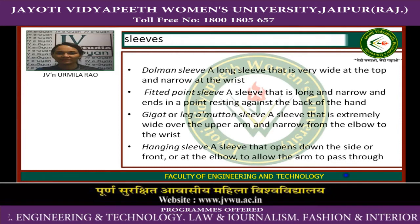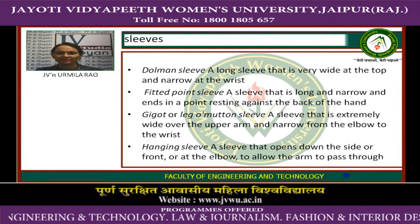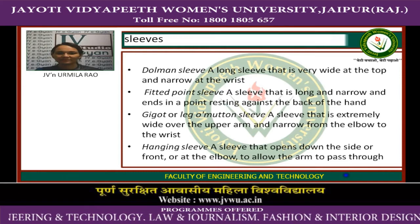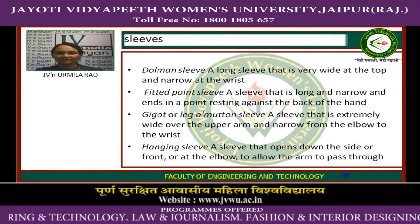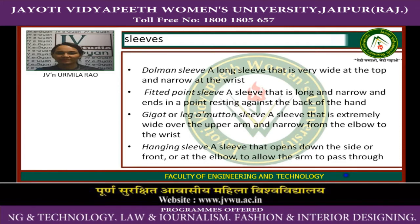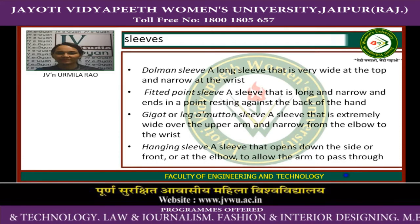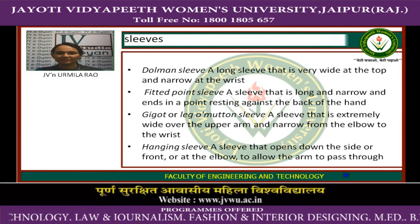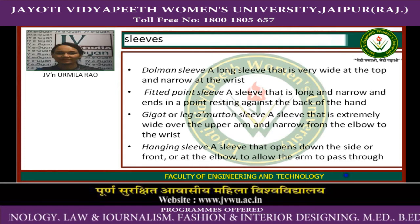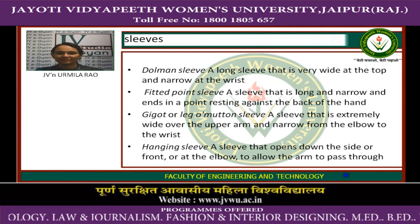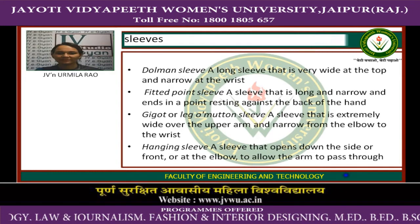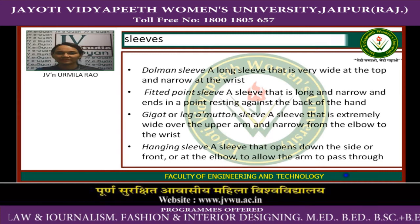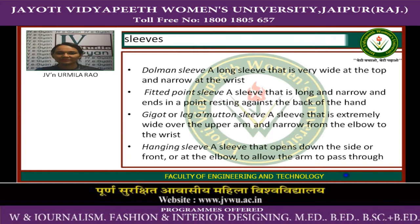Dolman sleeve: a long sleeve that is very wide at the top and narrow at the waist. Fitted point sleeve: a sleeve that is long and narrow and ends at a point resting against the back of the hand. Leg-o-mutton sleeve: a sleeve that is extremely wide over the upper arm and narrow from the elbow to wrist. Hanging sleeve: a sleeve that opens down the side, front, or at the elbow to allow the arm to pass through.